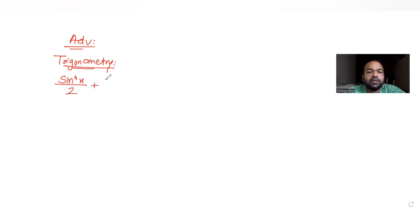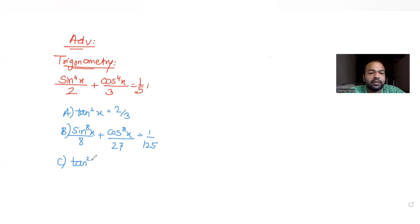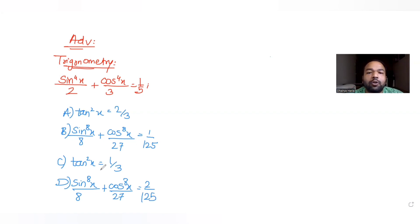The question says that if the expression sin⁴x/2 + cos⁴x/3 = 1/5 is given to us, we have to find which of the four options is correct. The first option says tan²x = 2/3. The second option says sin⁸x/8 + cos⁸x/27 = 1/125. The third option says tan²x = 1/3. The fourth option says sin⁸x/8 + cos⁸x/27 = 2/1. This is a multiple choice question and we can have multiple answers correct.